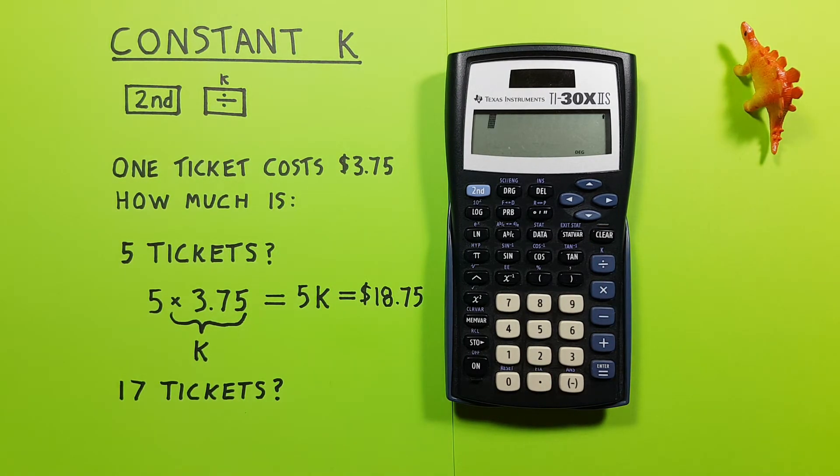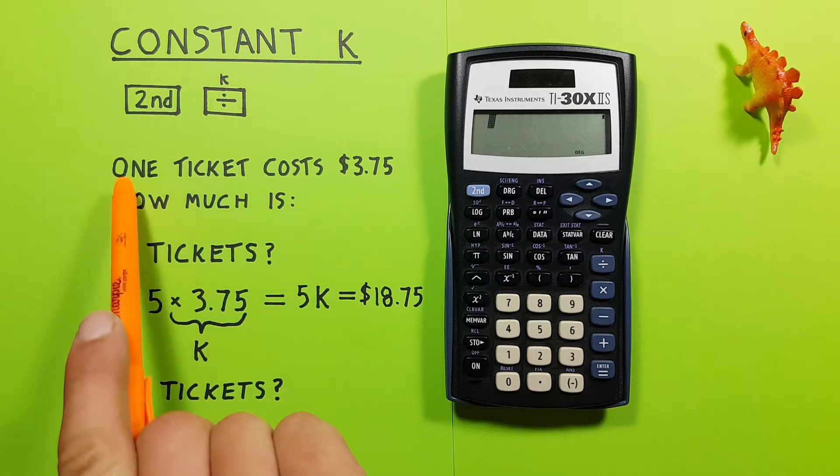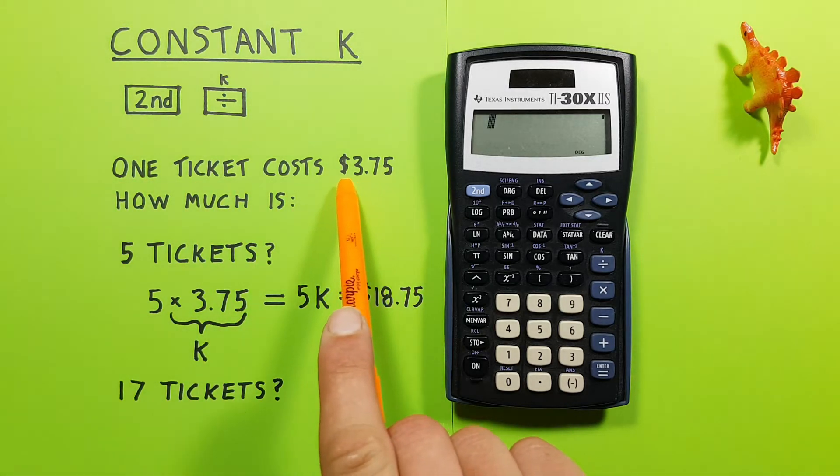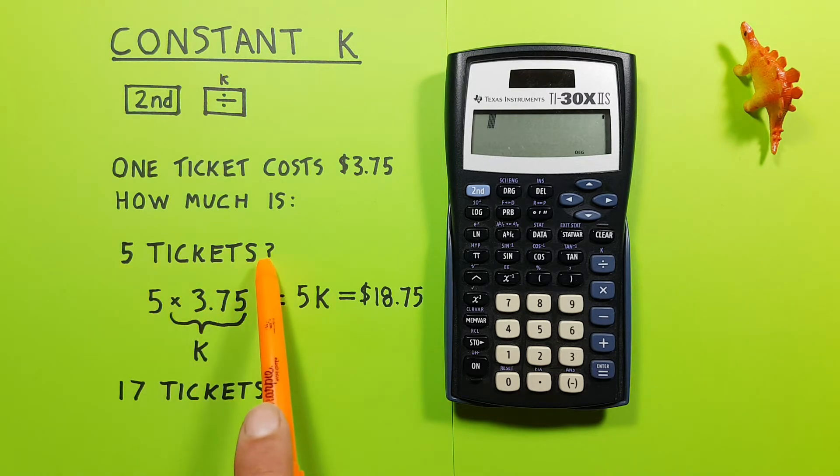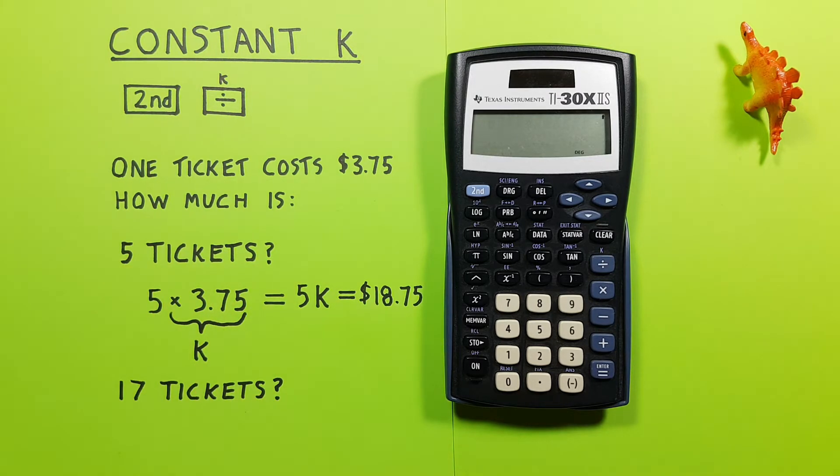Let's take a look at how we can use this. We can use it to determine the price of various ticket packages. Let's say we wanted to go to a show, and one ticket costs $3.75. And we want to know how much different ticket packages cost. Well, we can use the constant function for this.